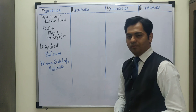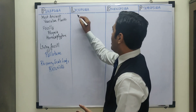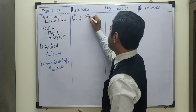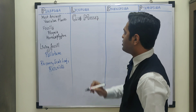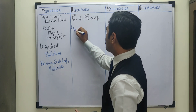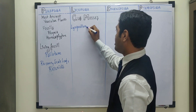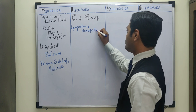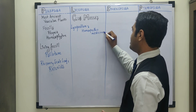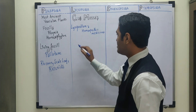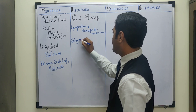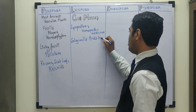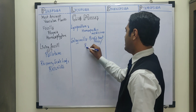Moving to the next class, Lycopsida. The plants of Lycopsida are commonly known as club mosses. One important member of this category is Lycopodium, which has a very important use in making tonics and syrups for homeopathic medicines. Another member of Lycopsida is Selaginella, also known as bird's nest moss or the resurrection plant.